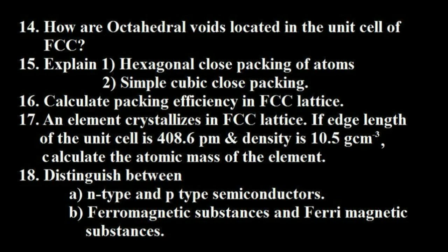Question 17: An element crystallizes in an FCC lattice. If the edge length of the unit cell is 408.6 pm and density is 10.5 g/cc, calculate the atomic mass of the element. Question 18: Distinguish between (a) N-type and P-type semiconductors, and (b) ferromagnetic substances and ferrimagnetic substances.